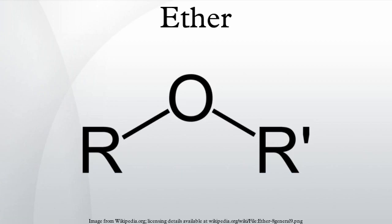Ullmann condensation: the Ullmann condensation is similar to the Williamson method except that the substrate is an aryl halide; such reactions generally require a catalyst such as copper. Electrophilic addition of alcohols to alkenes: alcohols add to electrophilically activated alkenes — R2C=CH2 + ROH → R2CH-CH2-OR. Acid catalysis is required; often mercury trifluoroacetate is used as a catalyst, generating an ether with Markovnikov regiochemistry. Using similar reactions, tetrahydropyranyl ethers are used as protective groups for alcohols.